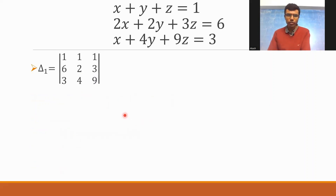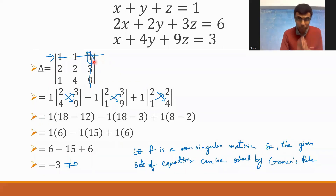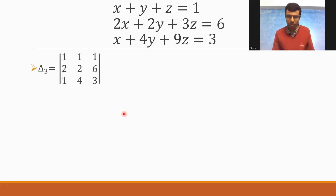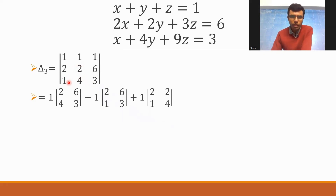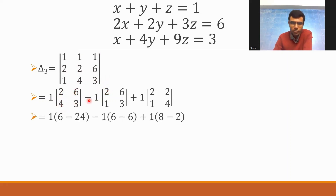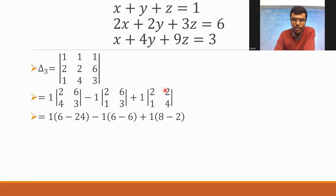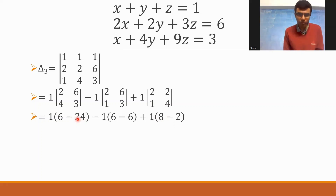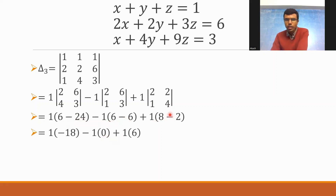For delta 3, replace the third column of delta with the elements of D — 1, 6, 3. Again the basic expansion: 1 into det(2,6,4,3) minus 1 into det(2,6,1,3) plus 1 into det(2,2,1,4). So: 2 threes are 6 minus 4 sixes are 24; minus 1 into 6 minus 6; plus 1 into 8 minus 2. So 6 minus 24 is minus 18. Minus 1 into 0, plus 1 into 6. Minus 18 plus 6 is minus 12. Delta 3 is minus 12.